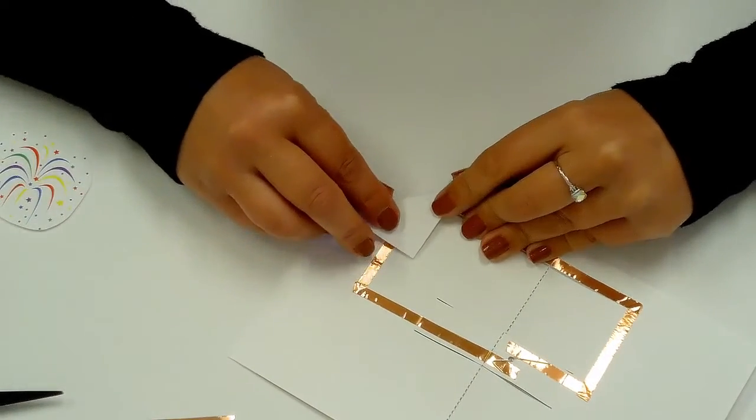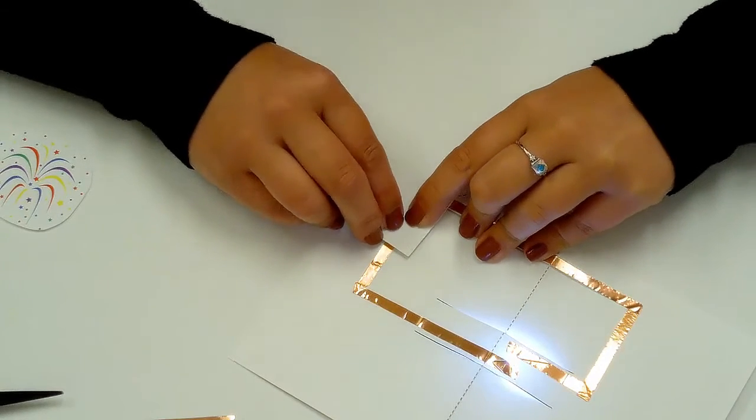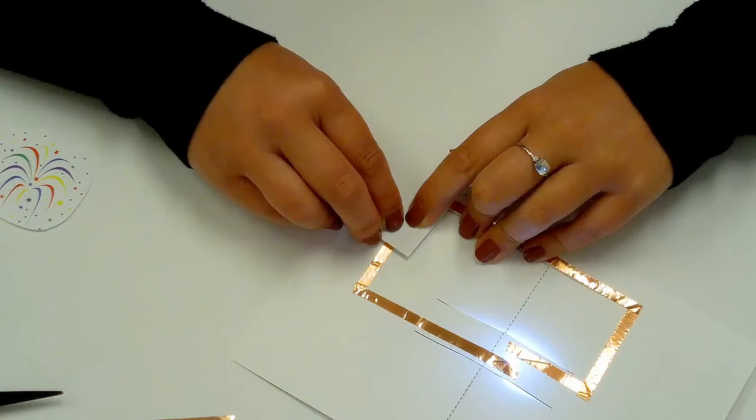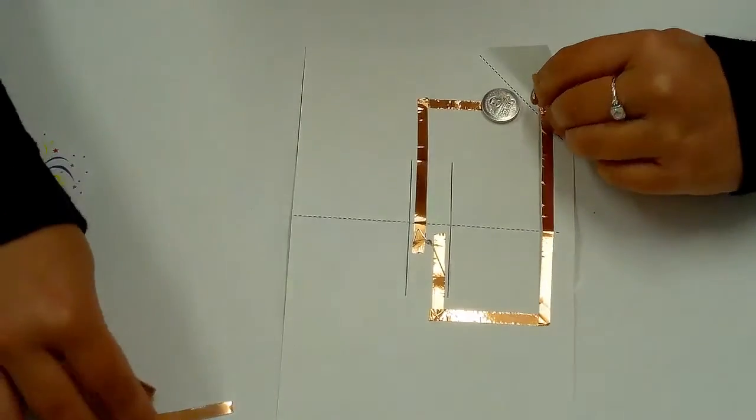If it did not light up, make sure the copper tape is correctly touching the battery and the arms of the LED are touching the copper tape. If it still isn't working, reposition the LED light so the arms are touching the opposite sides of tape.